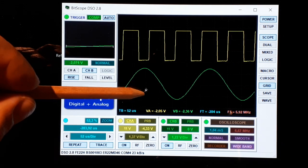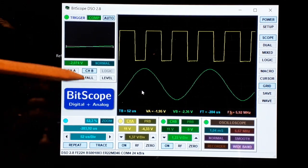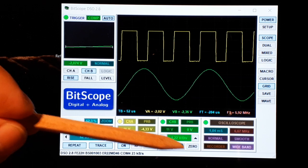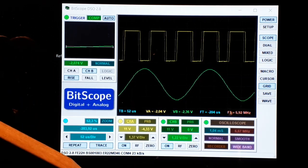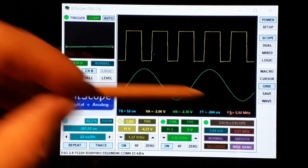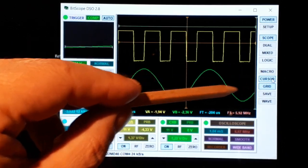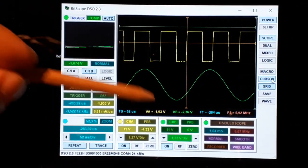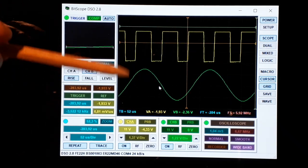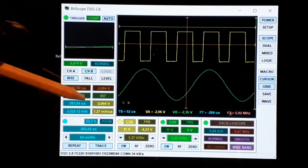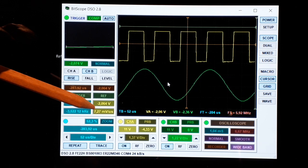So now this one is triggered. Also we have the cursors. If we click in cursors, there are several cursors here, vertical, horizontal ones, and this panel appears.